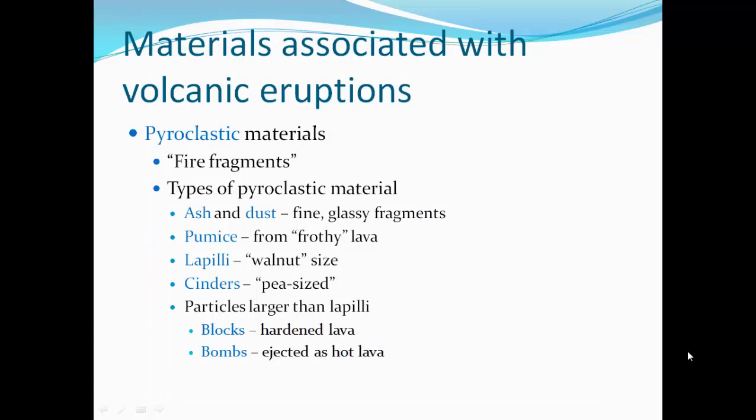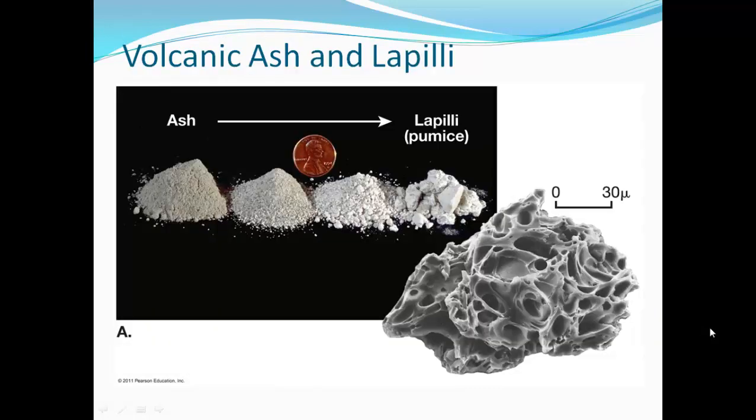Pyroclastic materials are materials ejected out of the volcano — we call them fire fragments. We differentiate between them by size of particle. Very fine glassy fragments are ash and dust. Pumice consists of chunks of frothy, hole-filled rock — very light, and pumice can actually float in water. Lapilli are walnut-sized chunks, and cinders are pea-sized chunks. Particles larger than lapilli are blocks and bombs: a block is a chunk of hardened lava that gets ejected, while a bomb is ejected as hot lava and forms a streamlined aerodynamic shape because it cools in the air in flight.